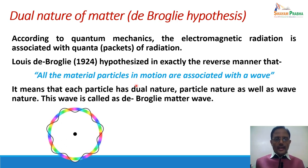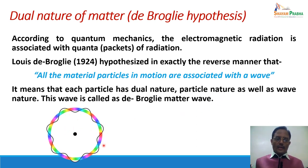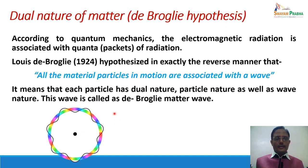Each particle has a dual nature: particle nature as well as wave nature, and this wave is called the de Broglie matter wave. It is different from electromagnetic waves — it is what we call a matter wave. The particle and wave both exist simultaneously and are associated with each other for microscopic particles. When we say it has particle nature, it has properties of a particle such as mass and volume. When it has wave nature, it has wave properties like wavelength, frequency, and velocity.